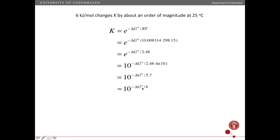So what this means is that if I change delta G standard by 6 kilojoules per mole then I change the equilibrium constant roughly an order of magnitude at 25 degrees Celsius. So this is a very useful equation to memorize and to use.